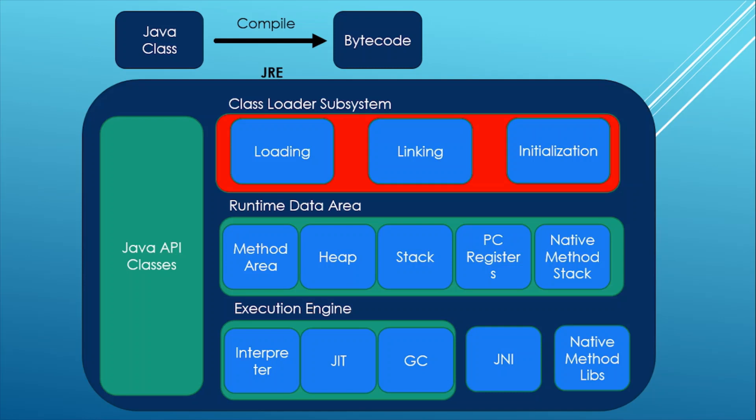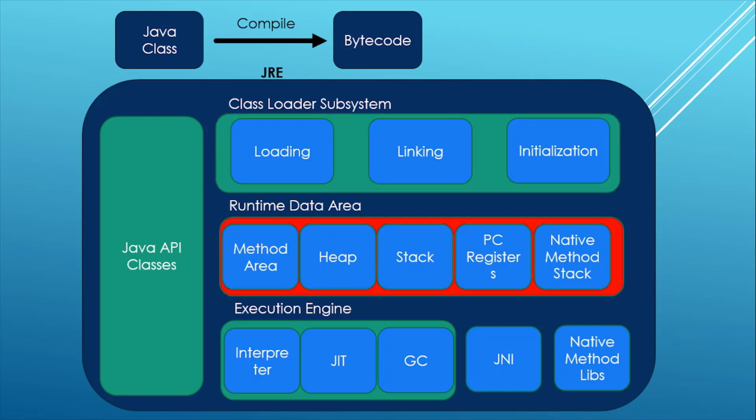The Class Loader Subsystem is further divided into three components. Number one is Loading — this is where loading of the class into memory happens. Next is Linking — it is a process of taking a class or interface and combining it into the runtime state of the Java Virtual Machine so that it can be executed. The last one is Initialization, which consists of actually executing the linked classes that were linked in the previous step.